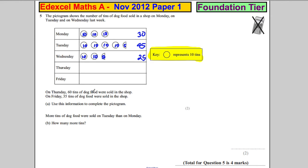On Thursday, 60 tins of dog food were sold. We can draw that in. So that would be 6 circles. So 1, 2, 3, 4, 5, 6, which would be 60.